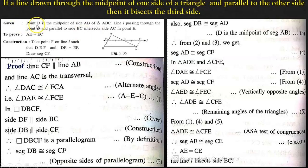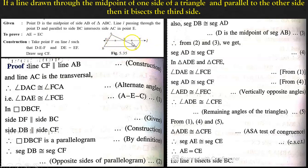According to the given information, point D is the midpoint of side AB of triangle ABC. Line L passes through D and is parallel to BC, intersecting AC at point E. We have to prove that AE is equal to EC. For the construction, we take point F on line L such that D, E, F are collinear and DE is congruent to EF, and we draw segment CF.